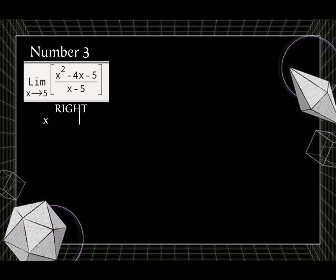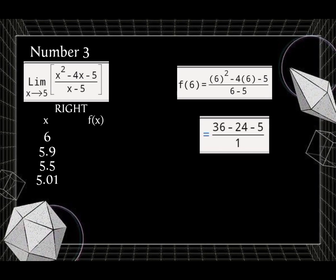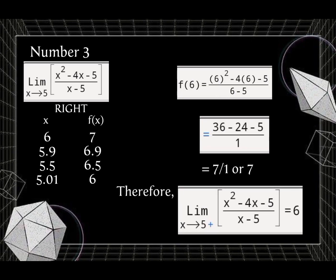While on the right side, our x values are 6, 5.9, 5.5, and 5.01. To get f of x, we substitute into the equation. f of x equals (x squared minus 4x minus 5) over (x minus 5). So f of 6 equals (6 squared minus 4 times 6 minus 5) over (6 minus 5). Evaluate: we get 7 over 1, or 7. We substitute all the values of x, then we get 6.9, 6.5, and 6. Therefore, the limit of (x squared minus 4x minus 5) over (x minus 5) as x approaches 5 from the right is 6.